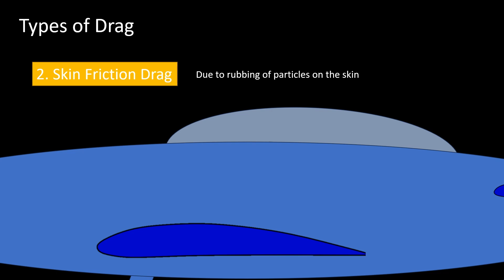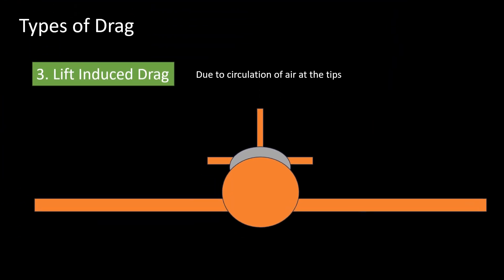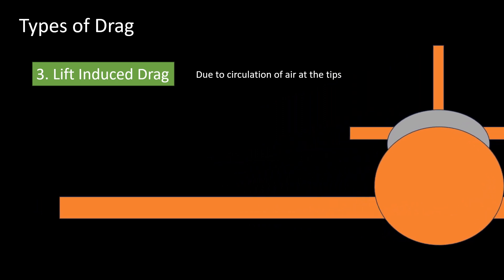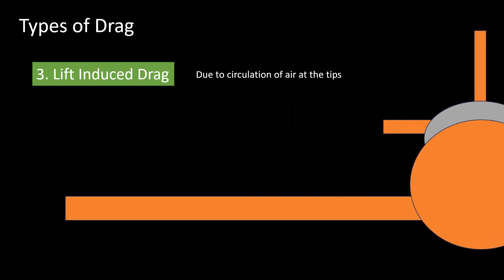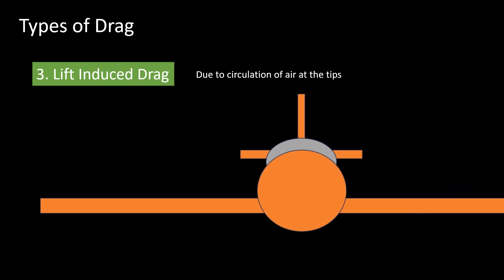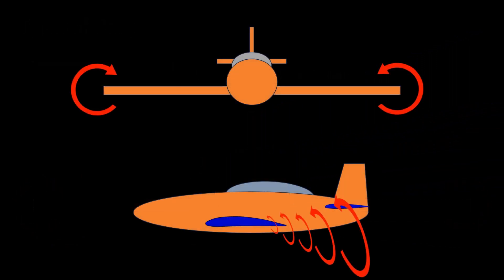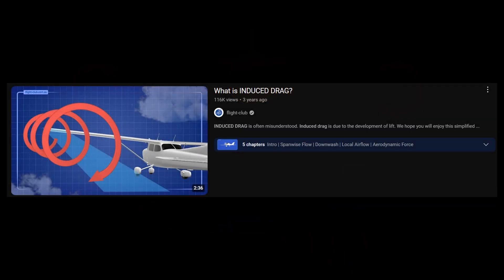Up next is lift-induced drag. This is due to the circulation of air around the wing in the form of vortices. This circulation tips the lift coefficient backwards, creating a force component that adds to the total drag. I found a video by Flight Club very helpful in understanding induced drag.